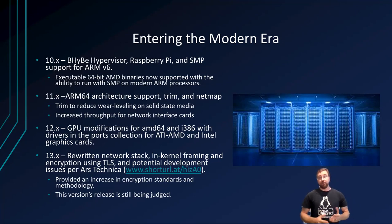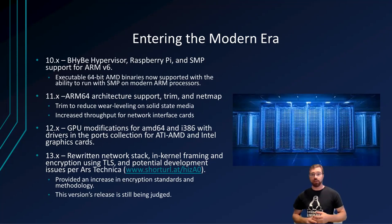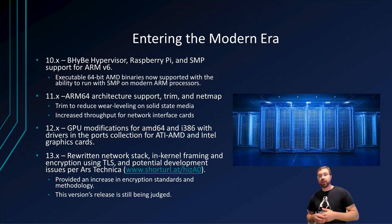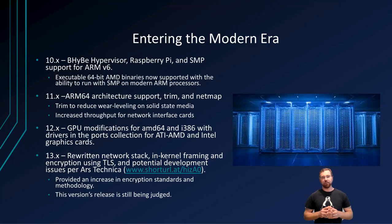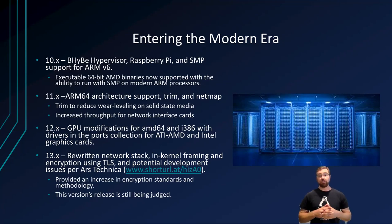Moving on to 2016, FreeBSD 11 — whose support ended on September 30th of 2021 — provided support for the 64-bit ARM architecture. Trim was also introduced for flash-based storage devices to reduce wear leveling, and an updated version of the NetMap framework was introduced, which allowed faster packet processing on network interface cards. NetMap was clearly focused on enterprise patrons, enabling servers to communicate at 40 gigabits over Ethernet.